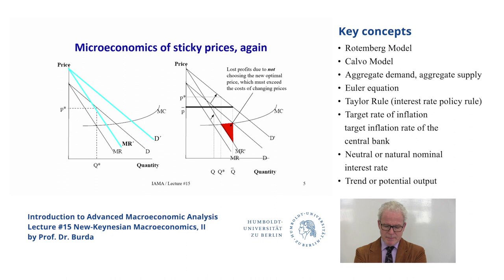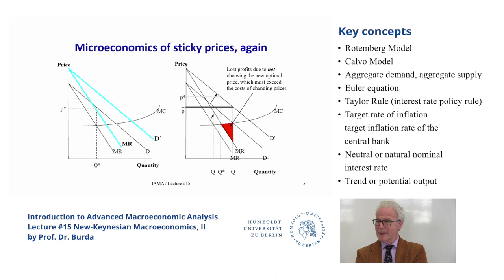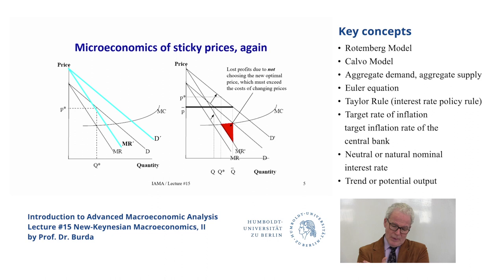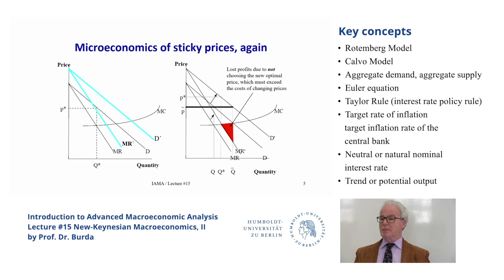Here's the picture you should remember. When we allow firms to set prices, we depart from the pure competitive paradigm — firms are price setters, not price takers. They set marginal revenue equal to marginal cost and choose the corresponding price. When the demand curve shifts from D to D prime, the question is: does the firm move to the new optimum price P-star, or does it stay at the old price?